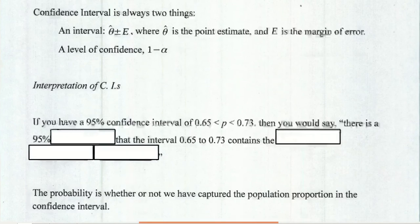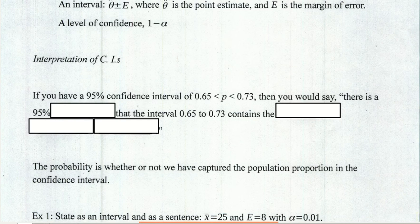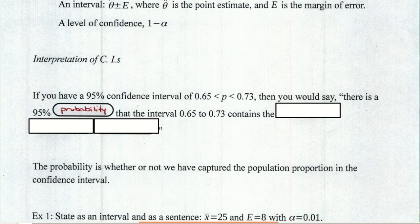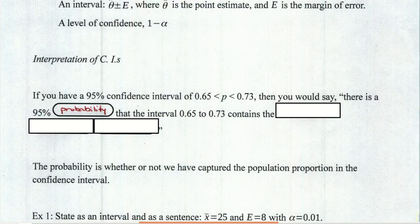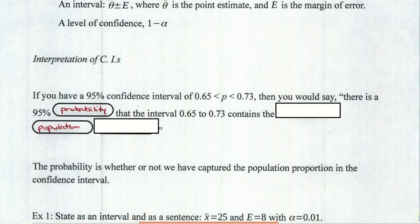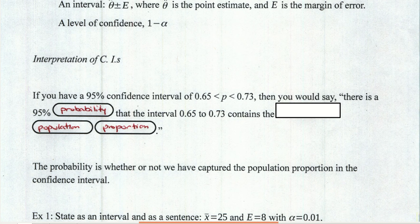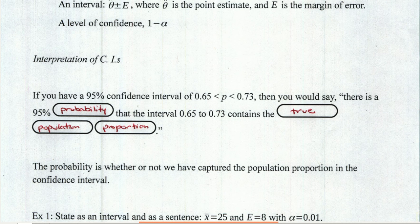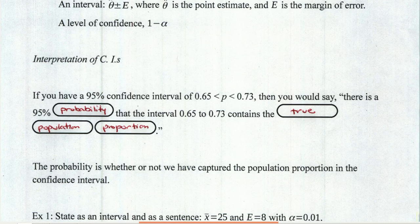If someone tells you a confidence interval, you might ask yourself, well, what does that mean? For example, suppose that someone told you that you have a 95% confidence interval of 0.65 less than p less than 0.73. So then what we'd say is there's a 95% chance or probability. I'm just going to say probability at this point, but later on we're going to just start saying chance. That the interval 0.65 to 0.73 contains the population parameter, or the population proportion. Now, we can say this a little bit more directly. We can emphasize the fact that we don't yet know the true population proportion. We've got a sample. So we can say that that interval captures the true population proportion 95% of the time.